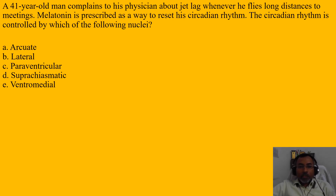The choices are: A - arcuate, B - lateral, C - paraventricular, D - suprachiasmatic, and E - ventromedial. These are all nuclei of the hypothalamus.